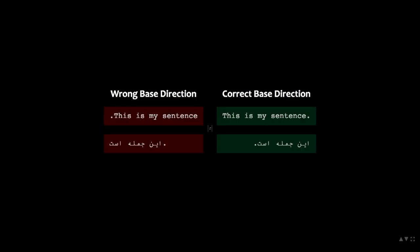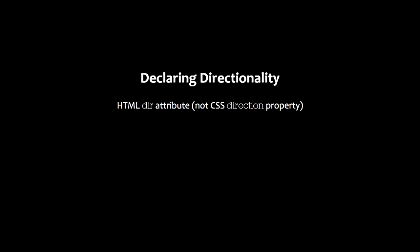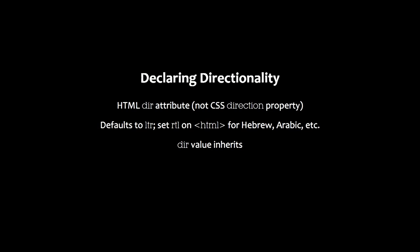If you have the wrong base direction, your punctuation ends up weird, your text might end up in the wrong order. So we need to find the base direction, and you have to declare it explicitly. We can't magically detect it — sometimes people write in a mix of Latin and Arabic because they're talking about CSS acronyms and properties, so you can't just count which characters appear more. You have to declare your directionality on Arabic and Hebrew documents. You do that with the HTML dir attribute. You do not do that with the CSS direction property, which should never have existed. Direction defaults to LTR, so you only really have to set it when dealing with right-to-left text, and it inherits through the tree, so you only have to set it at the top or wherever there's a change in direction.